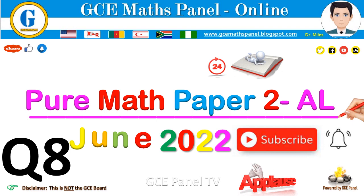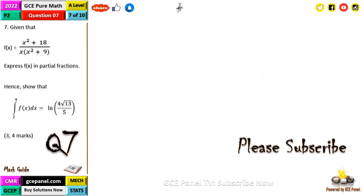So this question reads: Question 7, given that f(x) equals x squared plus 18 all that on x times x squared plus 9, express f(x) in partial fractions. Hence show that the integral from 2 to 4 of f(x) dx is equal to ln(4√13/5). This question carries 7 marks.